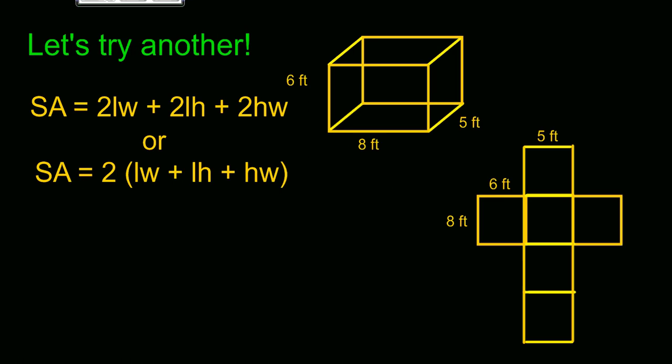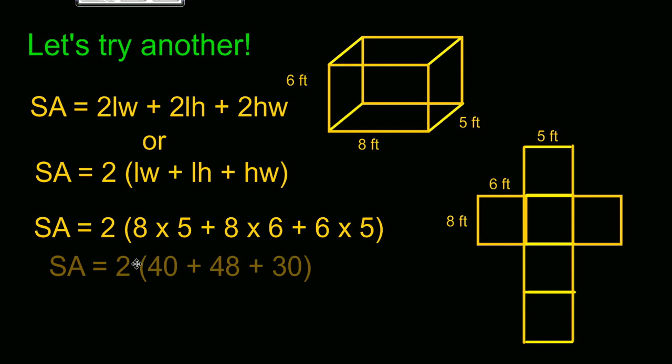Let's try one more. See if you can do it using the other formula this time. Pause the screen and then see how you do. Let's see how you did. Did you plug all your numbers in correctly? Now remember in order of operations multiplication and division come before addition and subtraction. So 8 times 5 is 40, 8 times 6 is 48, and 6 times 5 is 30. Then we do what's in the parentheses first and when we multiply that by 2 we get 236 square feet.